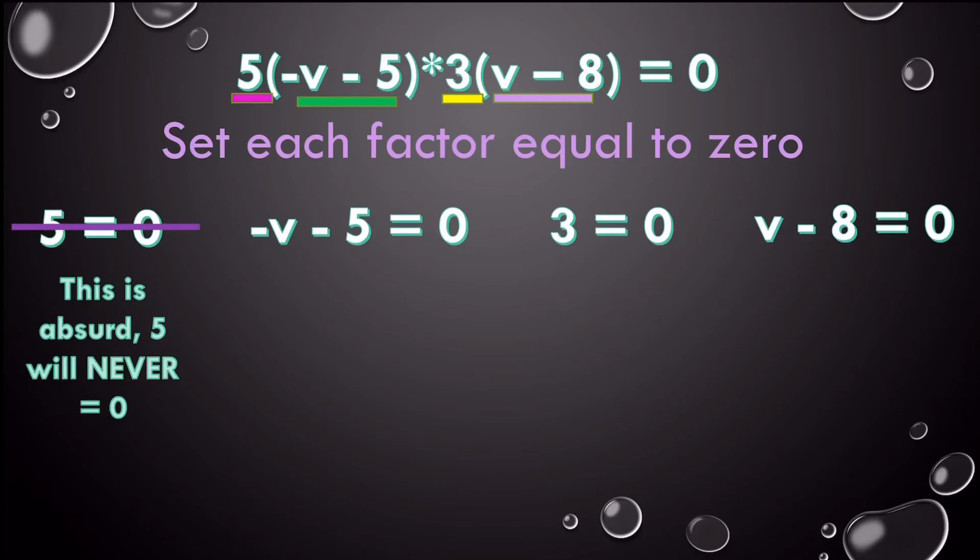Then I have negative v minus 5 equals zero. Well, I'm going to add 5 to both sides. Now, v is not alone. You have not solved this. You have to divide by negative 1. And you have to do it on both sides. So v really equals negative 5.